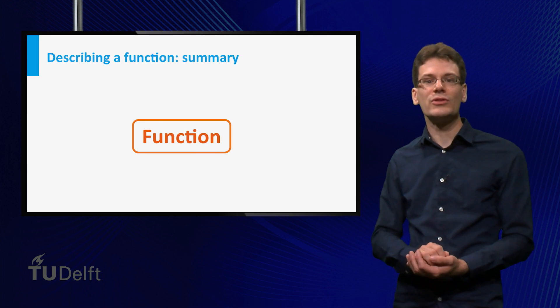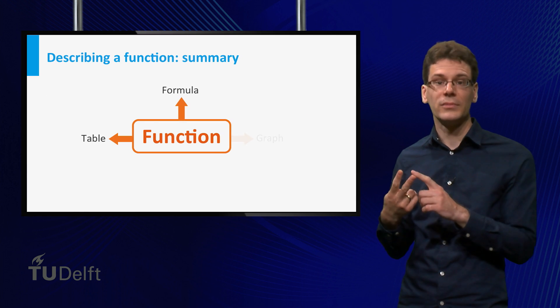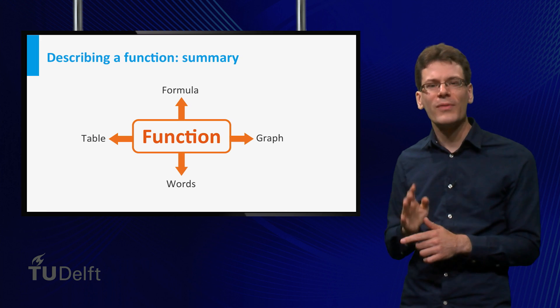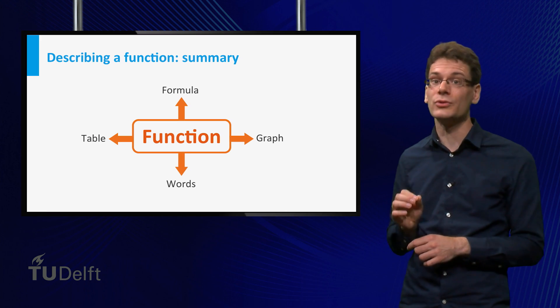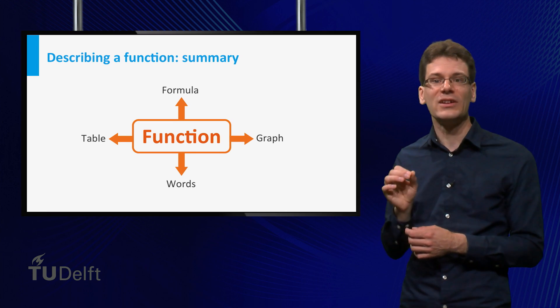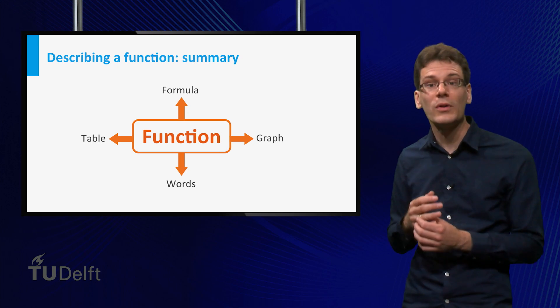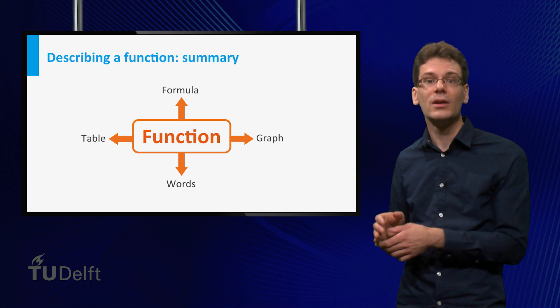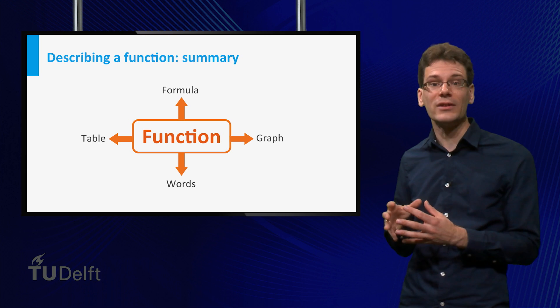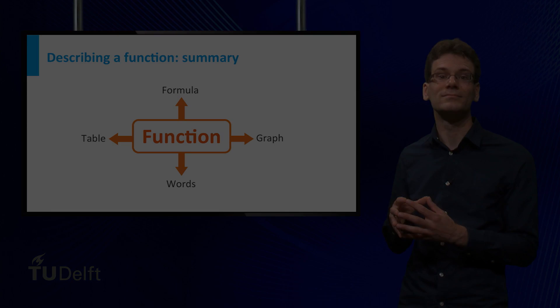Let me summarize. We have seen four ways to describe a function: by means of a formula, a table, a graph and in words. It is very useful and important to be able to switch between these four ways to describe a function. Especially when it comes to the standard functions that we deal with in this course, to not only focus on the formula and its properties, but make sure you also know what the graph looks like, that you can read tables and that you can describe the behavior and properties of the function in words.